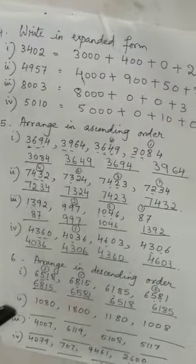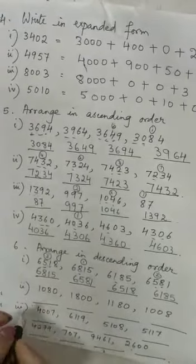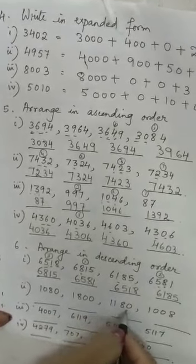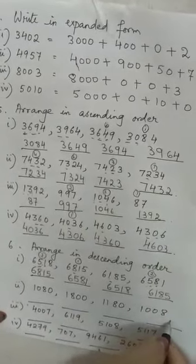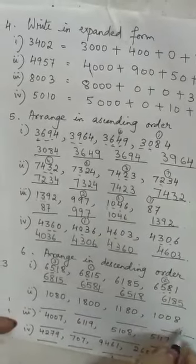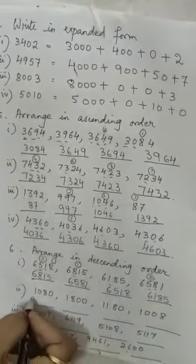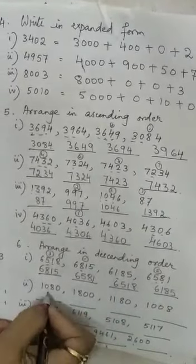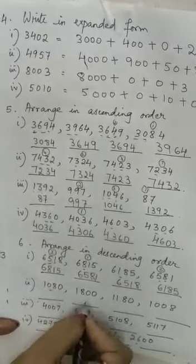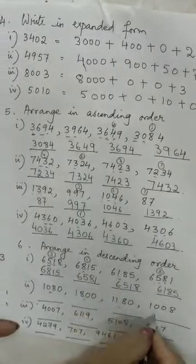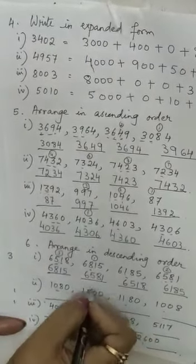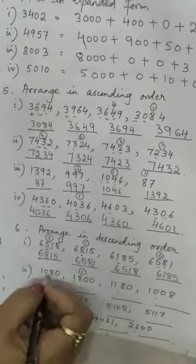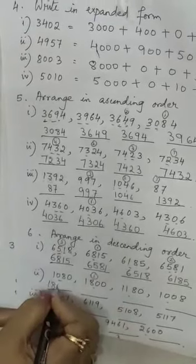Let us do the second example. In the hundreds place, here is 0, here is 8, here is 1, here is 0. Obviously 8 is the greatest amongst them, so we will put 1800 at first.